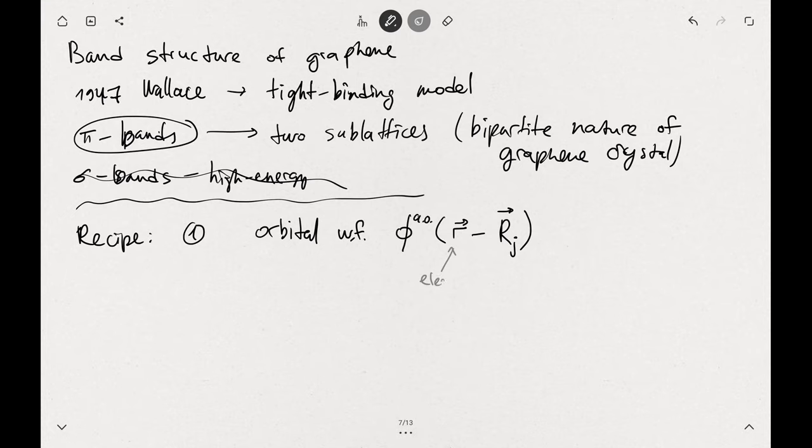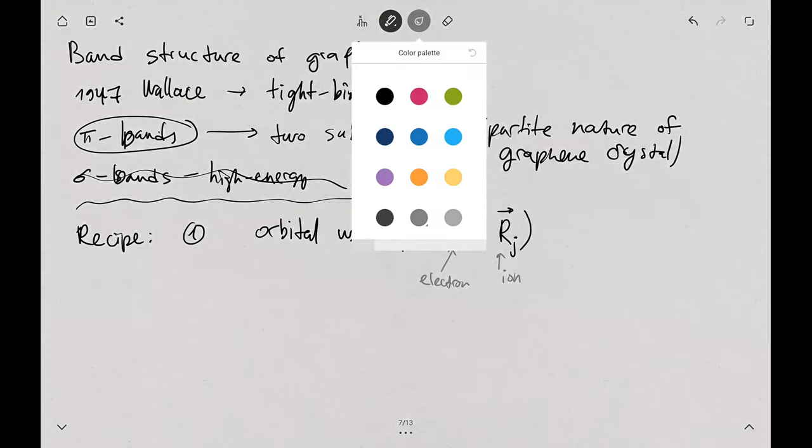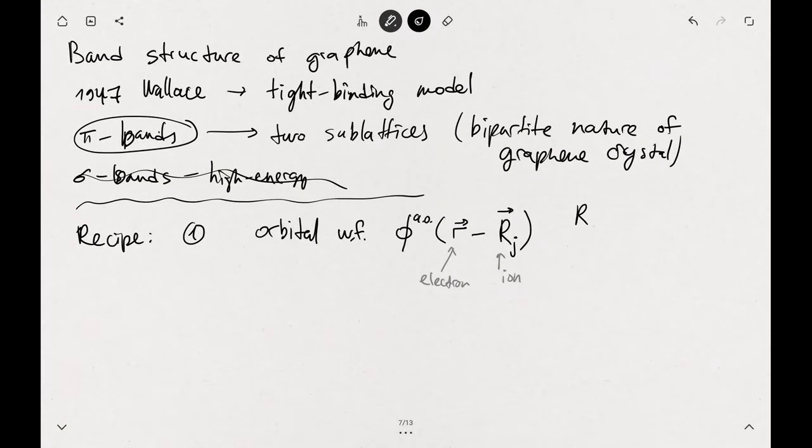Those are in terms of the position of the electron and the position of the ion. Because it's a crystal, r_j is actually defined by the Bravais lattice vectors. So r_j = m_j a_1 + n_j a_2.